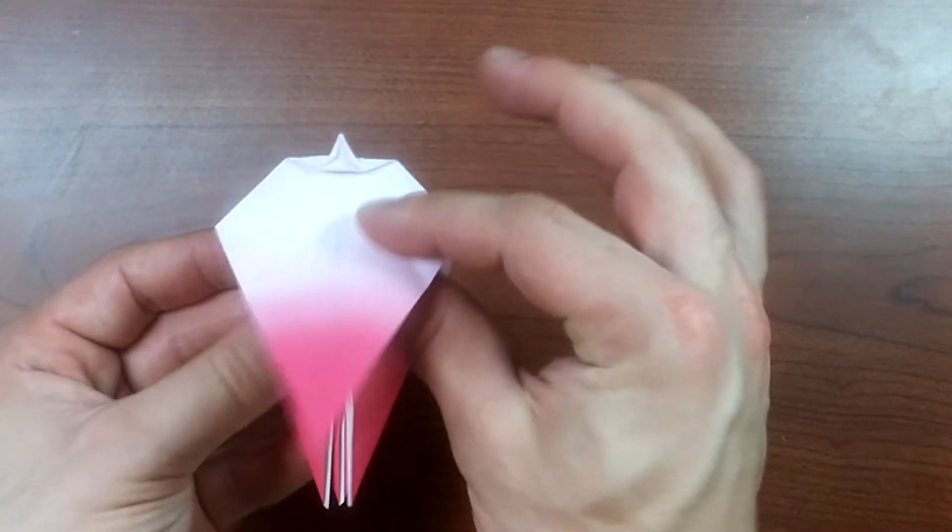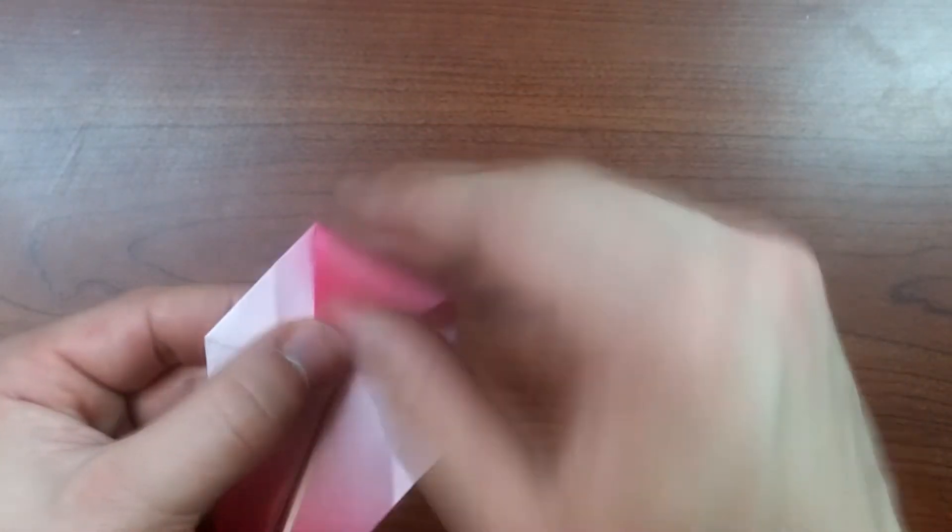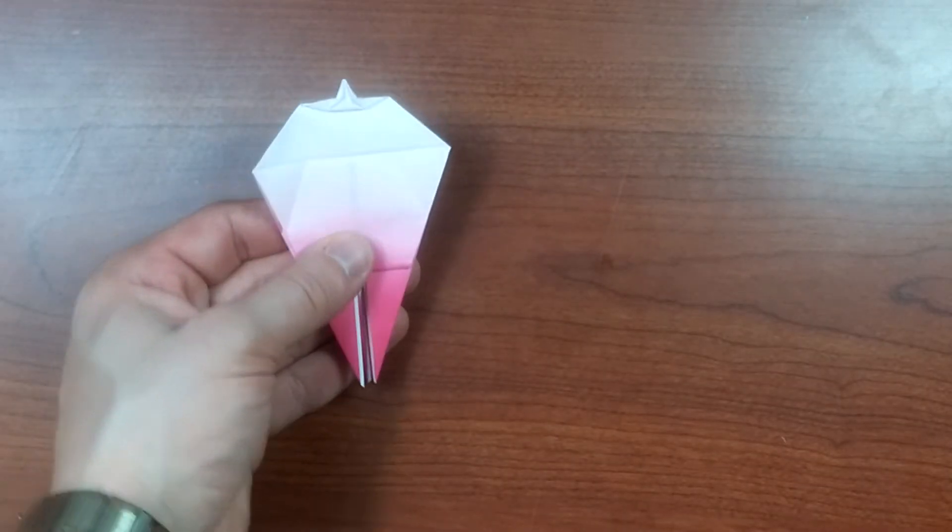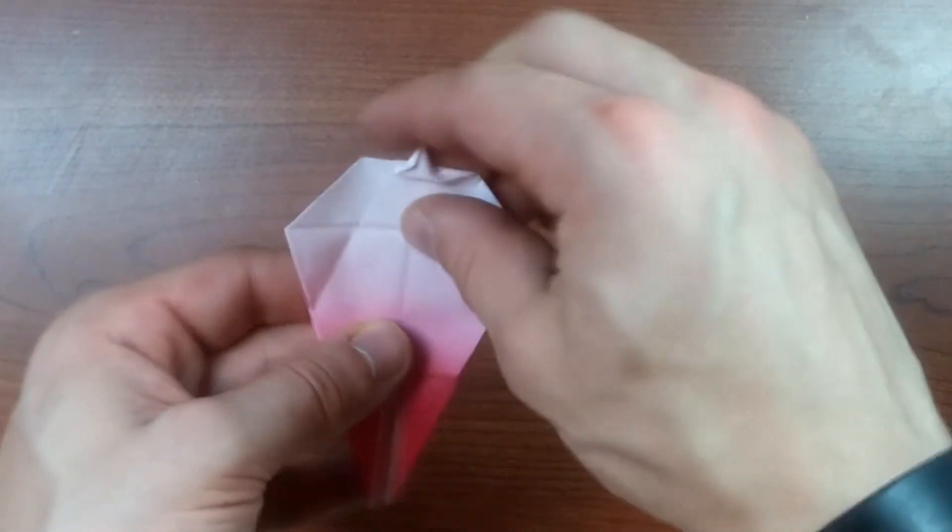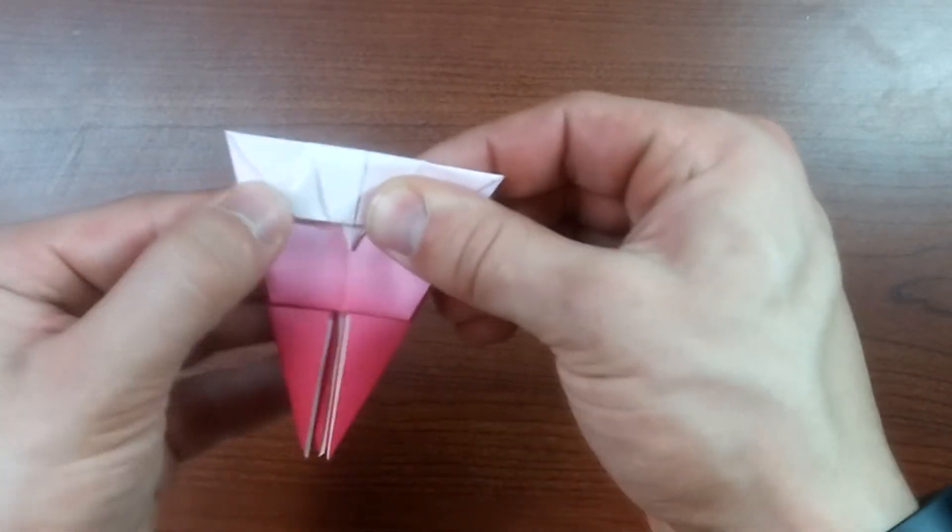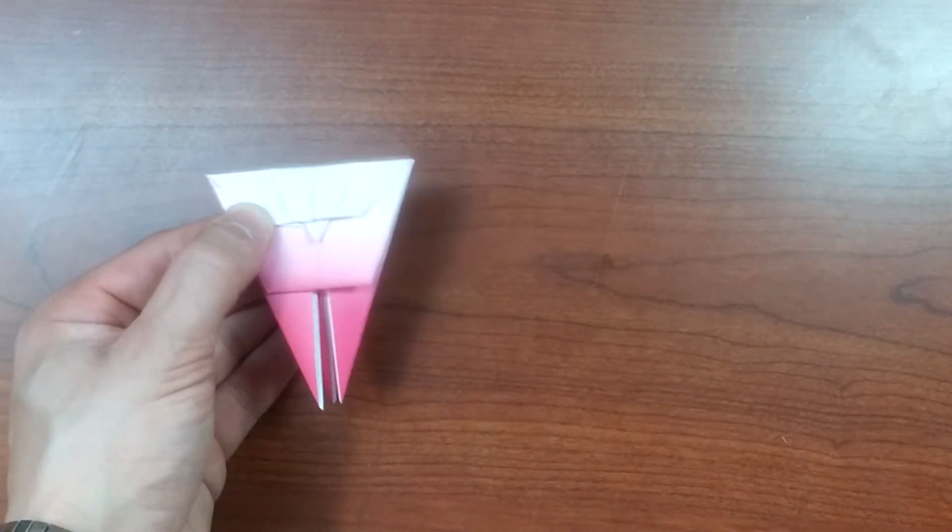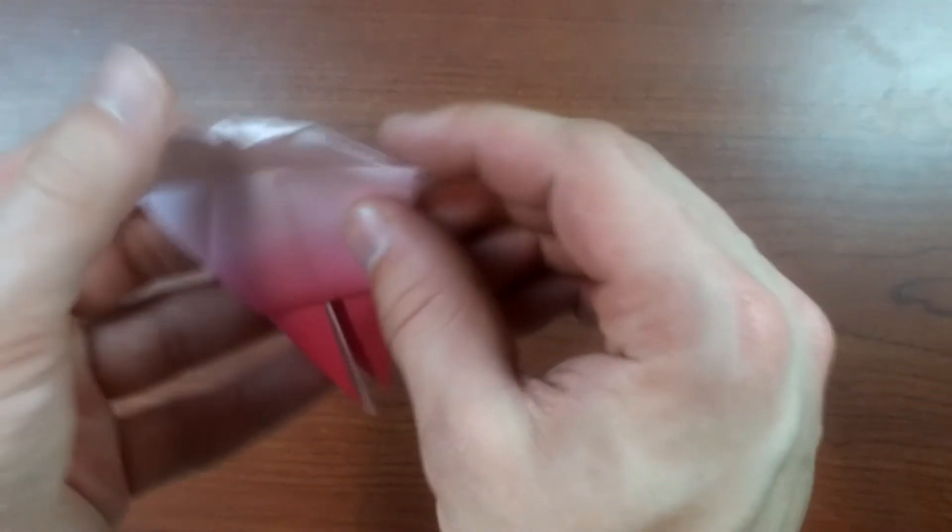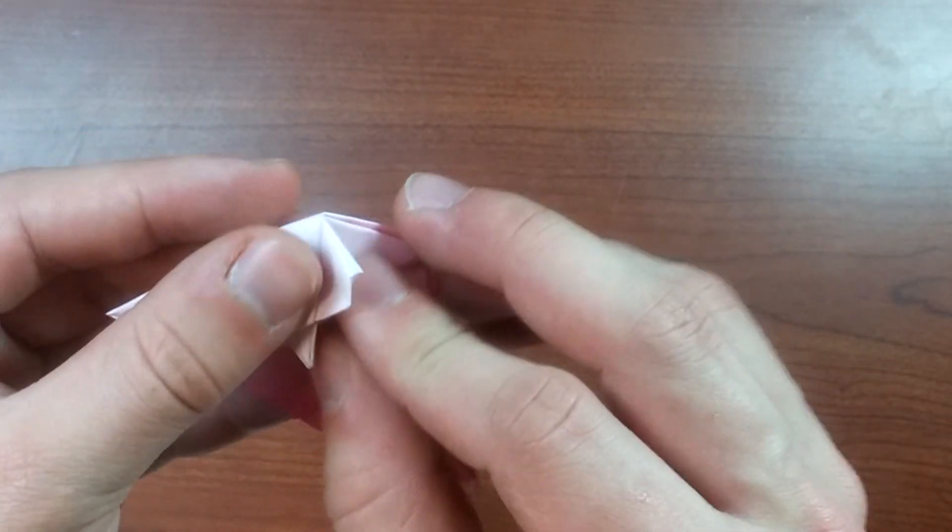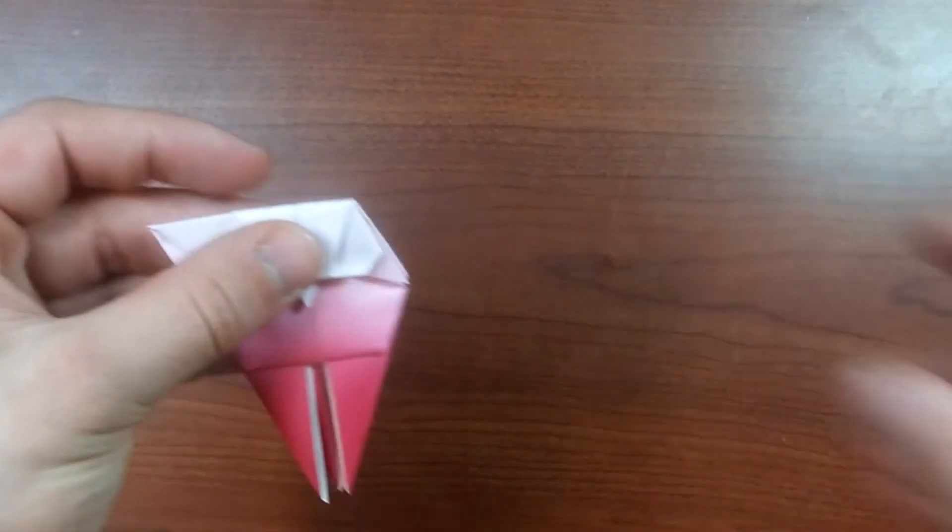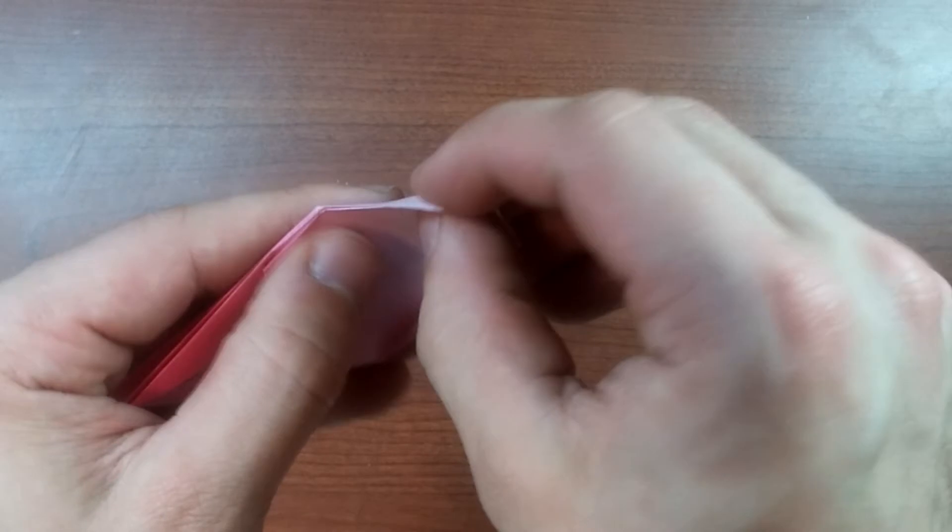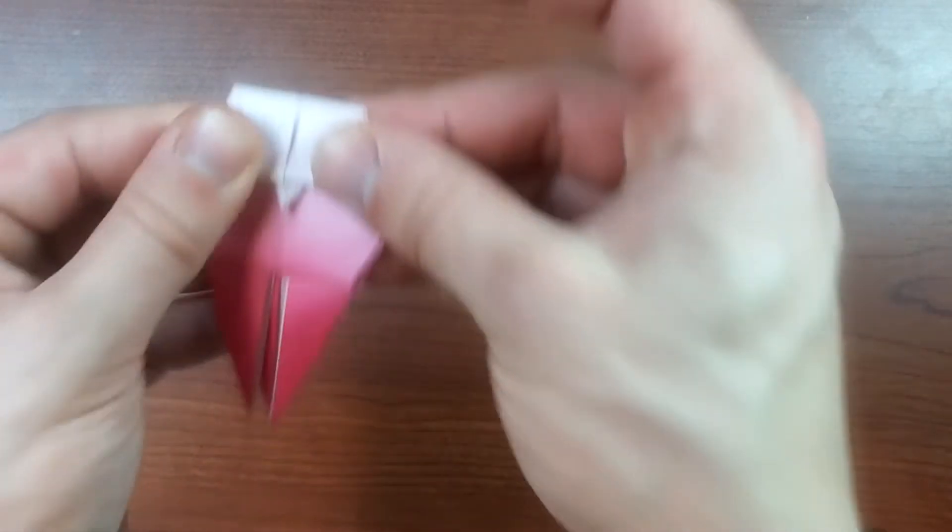Now fold this flap up. Fold this point to the center. And fold it back down. Now fold this whole flap along the center crease like this. Next, we are inside reverse folding using pre-existing creases actually. Well, sort of. Like this. And do the same to the other side.